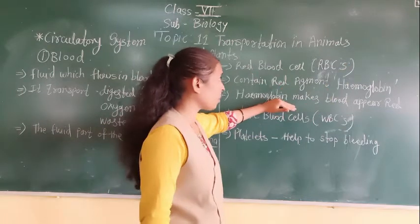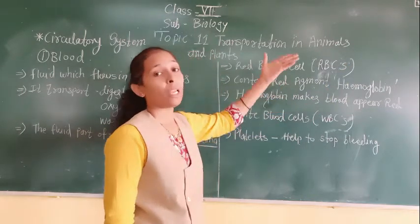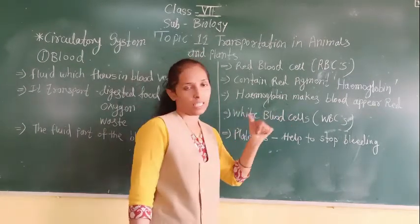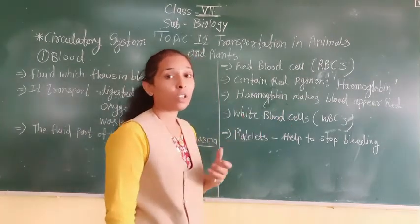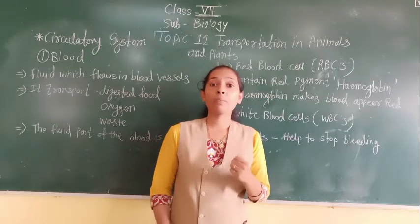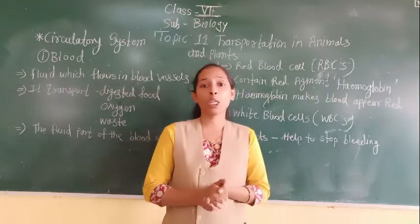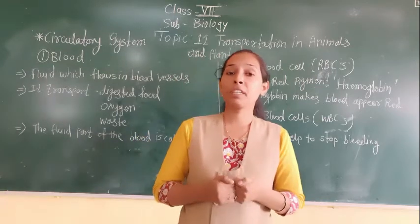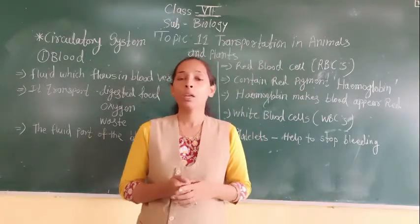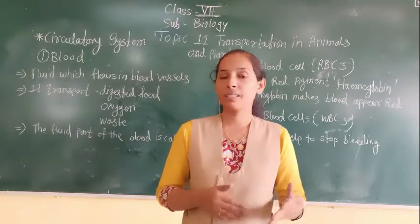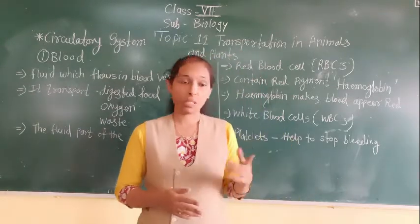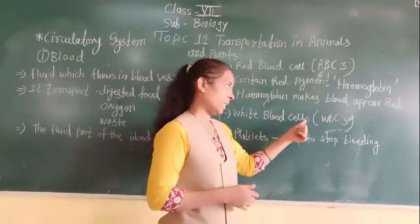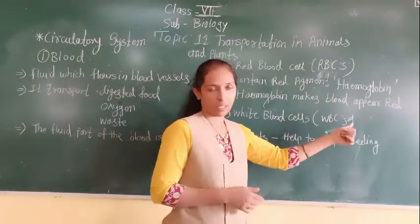Now we will discuss the next type of cell present in the blood — white blood cells, also called WBCs. White blood cells help to protect our body from diseases. They protect our body from different infections and help our body fight against different diseases.